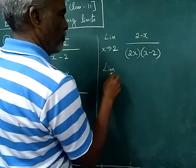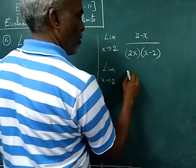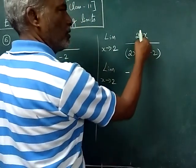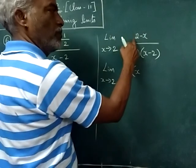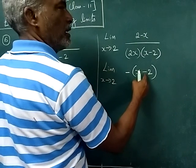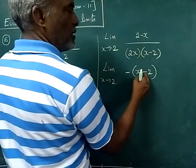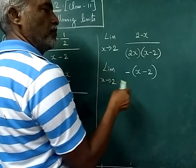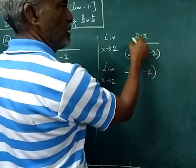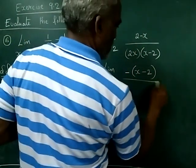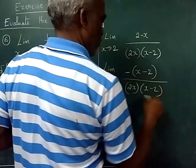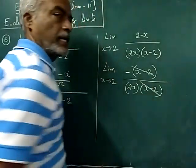limit x tends to 2. You take minus sign outside. Minus into x you will get minus x, and I want plus 2, therefore put minus 2. Minus into minus will give you plus. Divided by 2x into x minus 2. Now this term and this term will get cancelled.